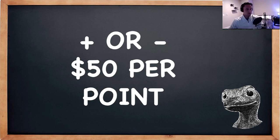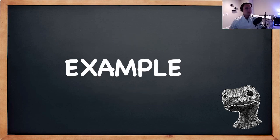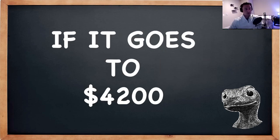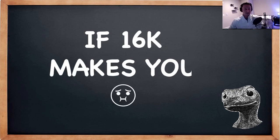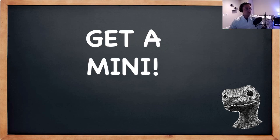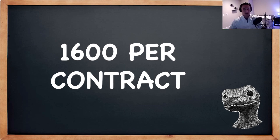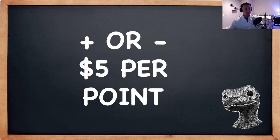It works like leverage — plus or minus $50 per point. So per one point the market moves up or down, you make or lose $50 per contract. If you go long /ES at 4,100 and it goes to 4,200, you just made $5,000. If $16,000 per contract is too much, they also have minis — /MES — which work exactly the same at one-tenth the cost: $1,600 margin requirement and plus or minus $5 per point.